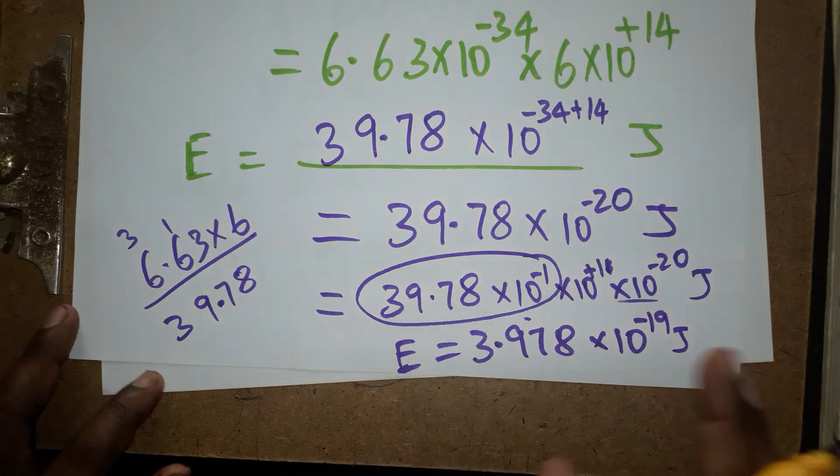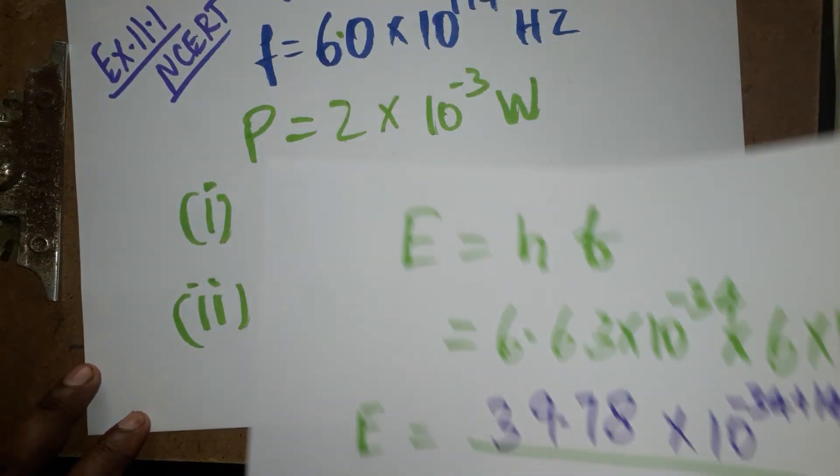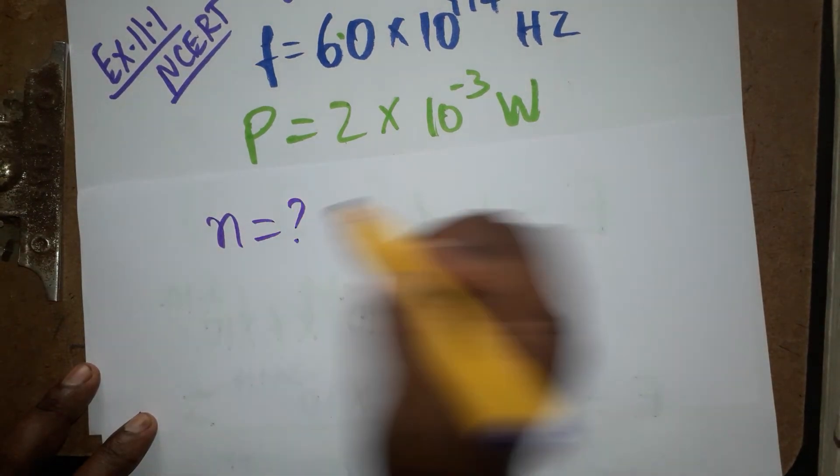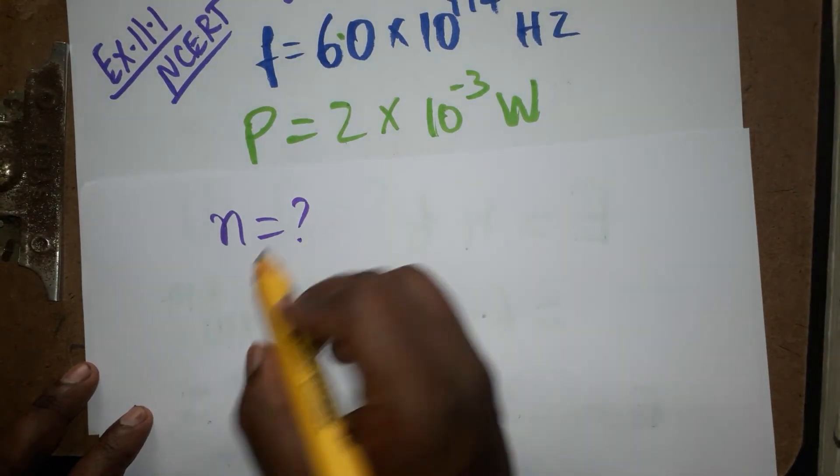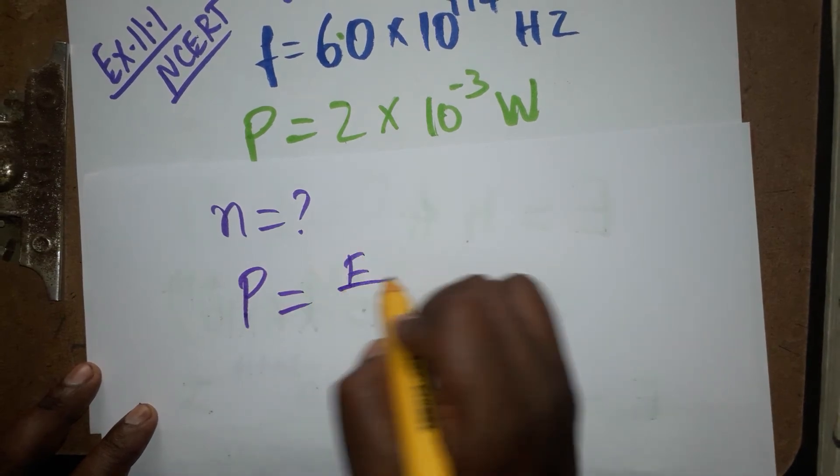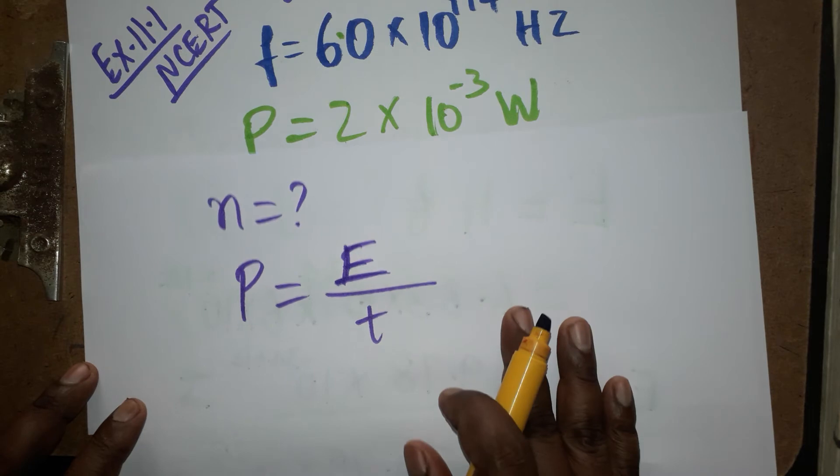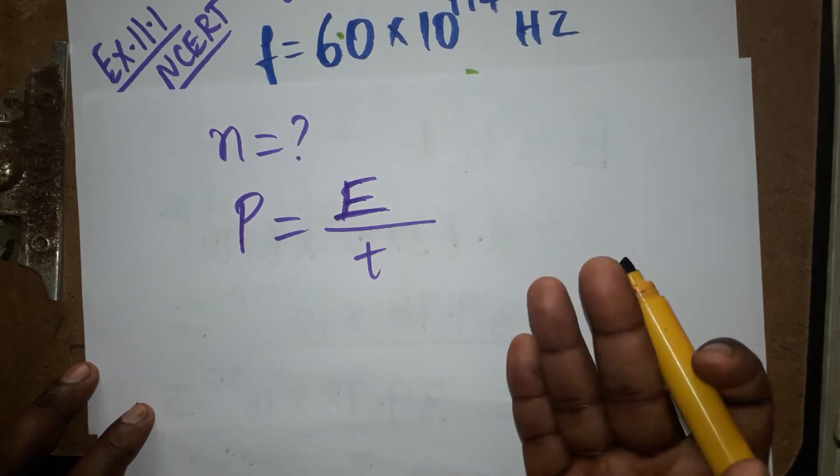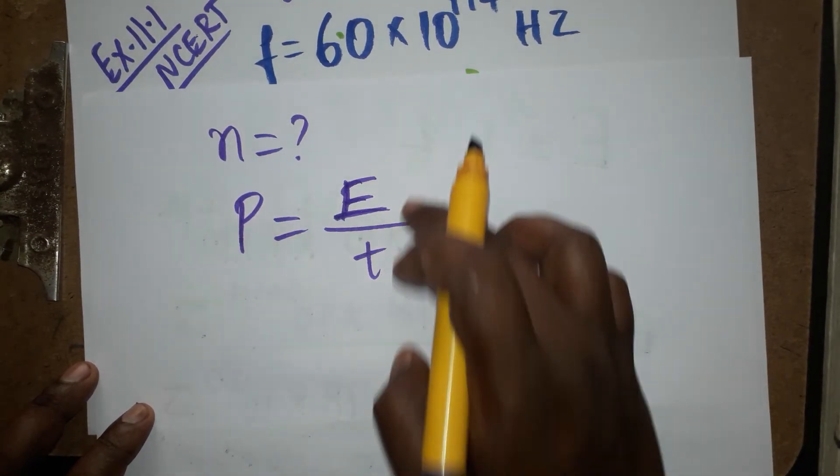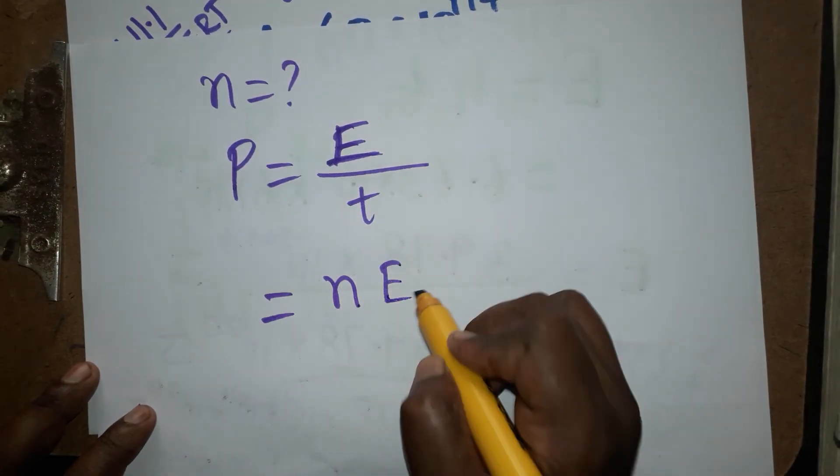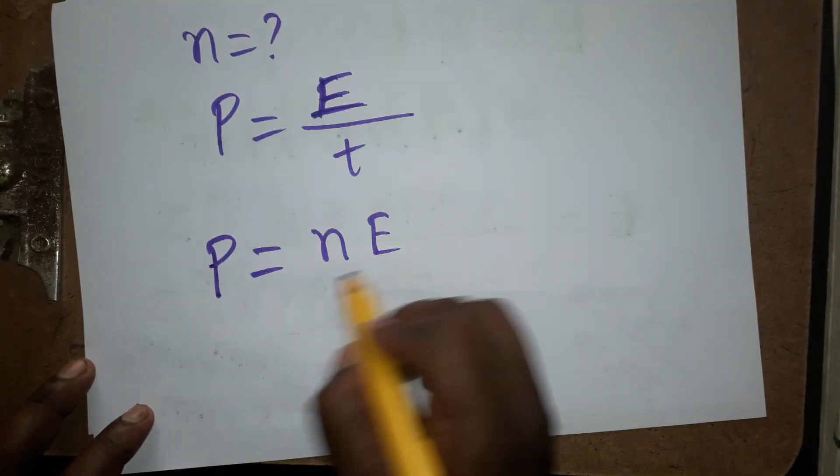The next one: number of photons emitting per unit time. Power is equal to energy by time. One by time period is frequency or number of photons emitting per unit time. I am taking one by time period as n. n times e equals p.